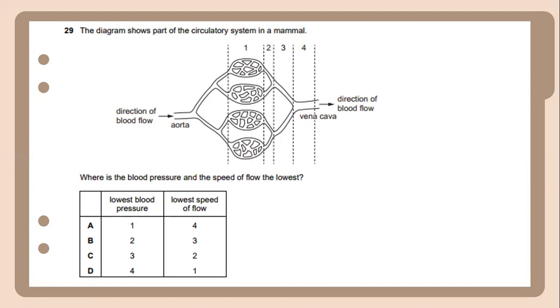Twenty-nine. The diagram shows part of the circulatory system in the mammal. Where is the blood pressure and the speed of flow the lowest? So the answer will be lowest blood pressure at number 4 and the lowest speed of flow is at number 1.